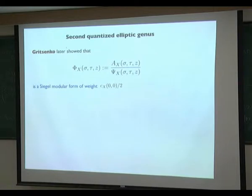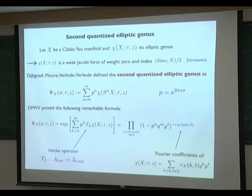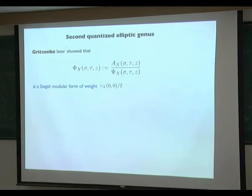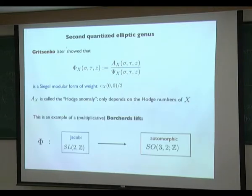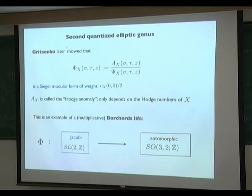Gritsenko showed that if you take the inverse of the second quantized elliptic genus and multiply by a certain factor — the Hodge anomaly, which depends only on the Hodge numbers of X — then this is a Siegel modular form. This is an example of a multiplicative Borcherds lift: a lift from Jacobi forms (modular forms of SL(2,Z)) to an automorphic form on SO(3,2) or Sp(4) in this case.